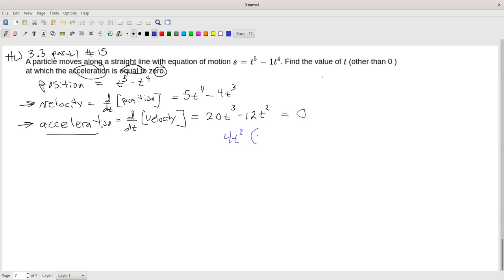4 goes into 20 5 times, t squared goes into t cubed t times, minus 4 goes into 12 3 times, t squared goes into t squared 1 times. Once it's factored, I can separate it. So either 4t squared equals 0 or 5t minus 3 equals 0.